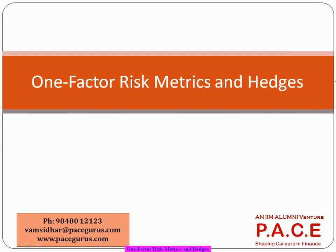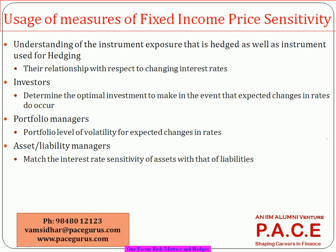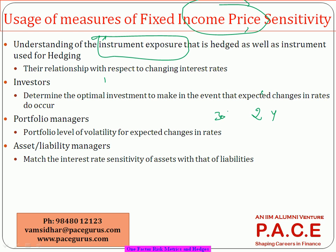The focus is that everyone is typically bothered about interest rate risk. When we talk about assessing interest rate risk, the focus is on two things: the instrument being used for hedging and the instrument that needs to be hedged. For example, probably I have a portfolio of bonds — 30% of my money invested in two-year maturity bonds, 50% in five-year maturity bonds, and the remaining 20% in 10-year maturity bonds.